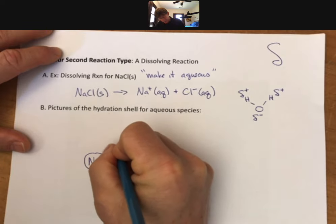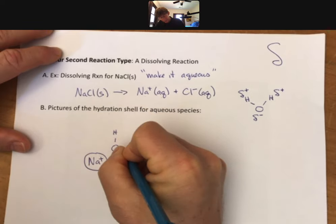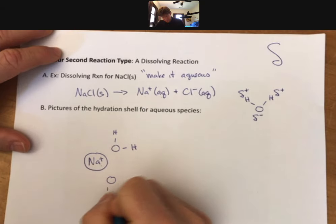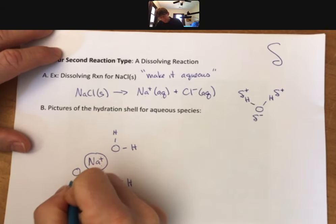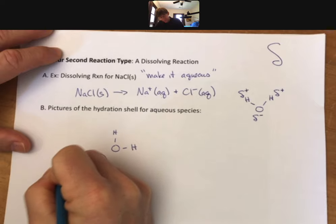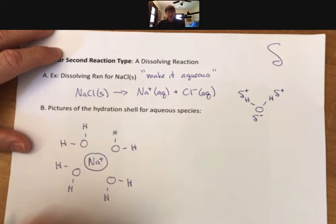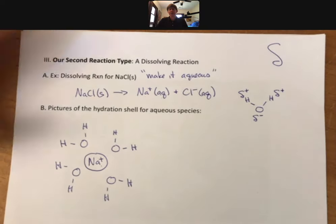So now when I draw this, or when you draw it, since this is a homework question, you're going to draw the oxygen closer to the sodium because the oxygen is partially negative. And you're going to draw a shell or a circle of them, four or five, like so.